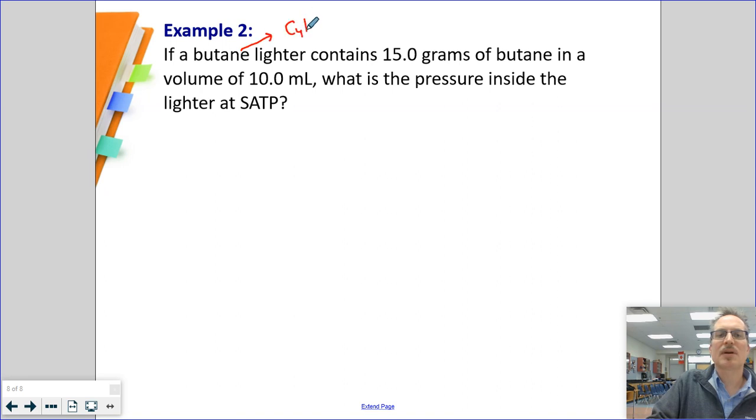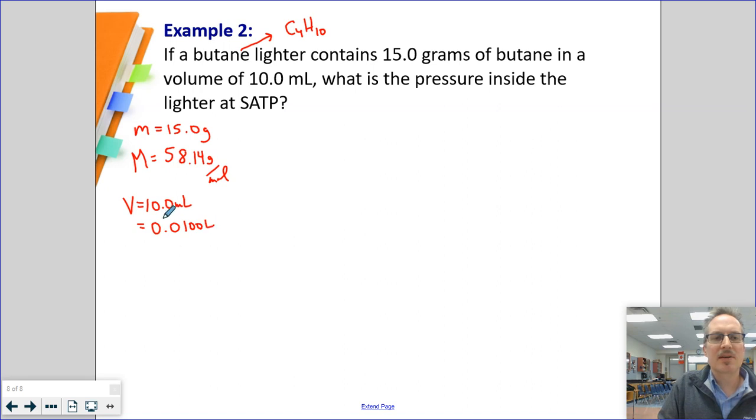This is butane, so that's C4H10. I have a mass of 15.0 grams. The moment I have a mass, I know I can get molar mass. So 4 times 12.01 plus 10 times 1.01, the molar mass of butane is 58.14 grams per mole. They also tell me my volume is 10 milliliters. I don't like it in milliliters, so I'm going to change it to liters. I'm going to divide by 1,000.